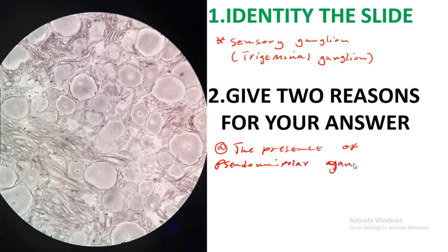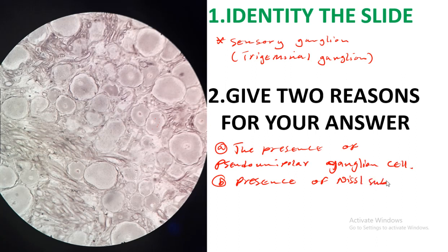These pseudo-unipolar ganglion cells have cytoplasm which contains the Nissl substance. You can also talk about the satellite cells — those dark, small, dark-stained cells you observe in the slide are satellite cells. These are the reasons we say this is a trigeminal ganglion or a sensory ganglion.